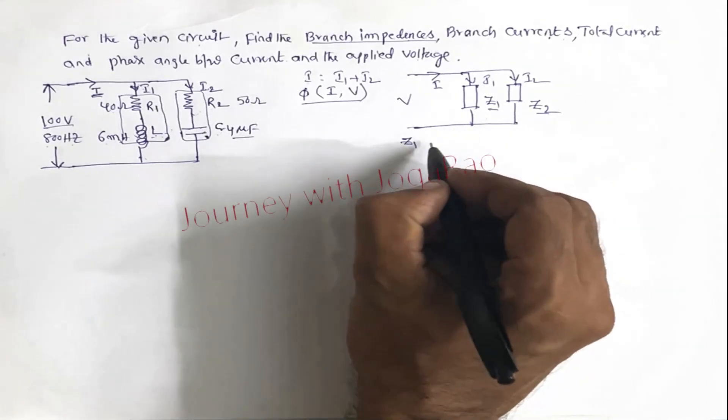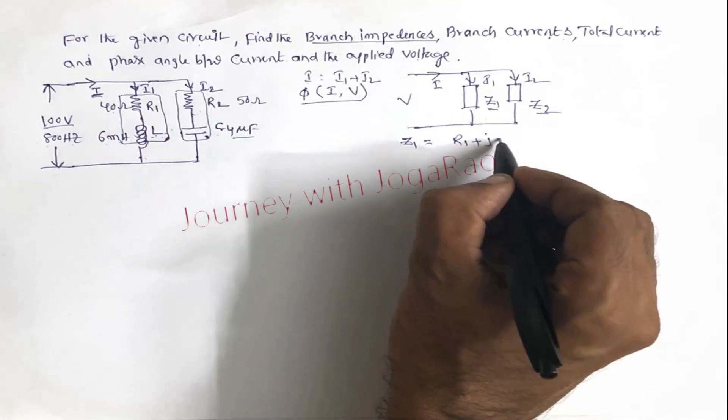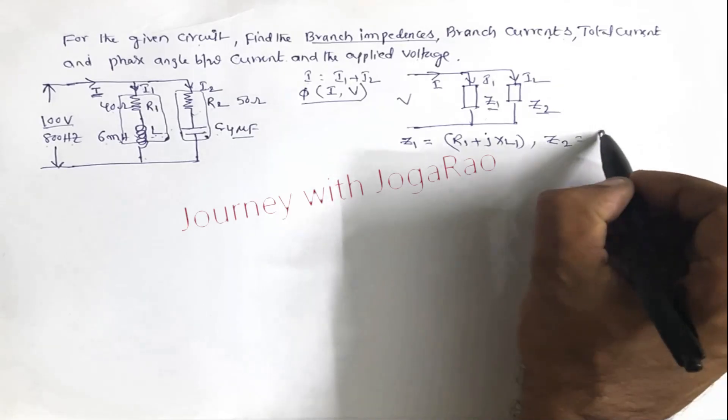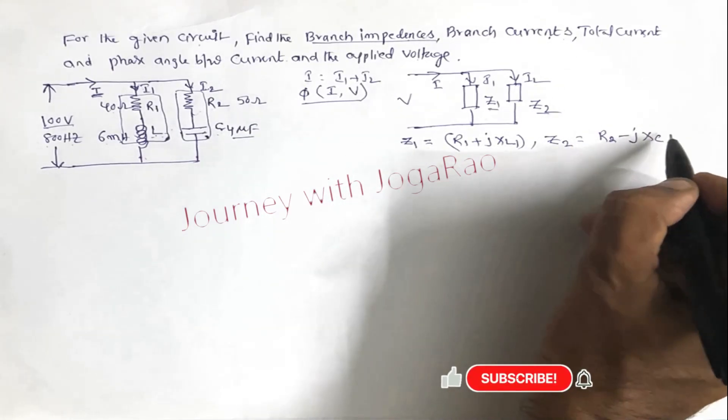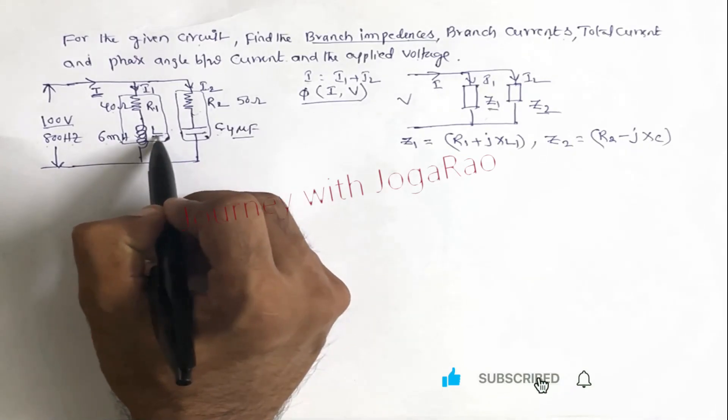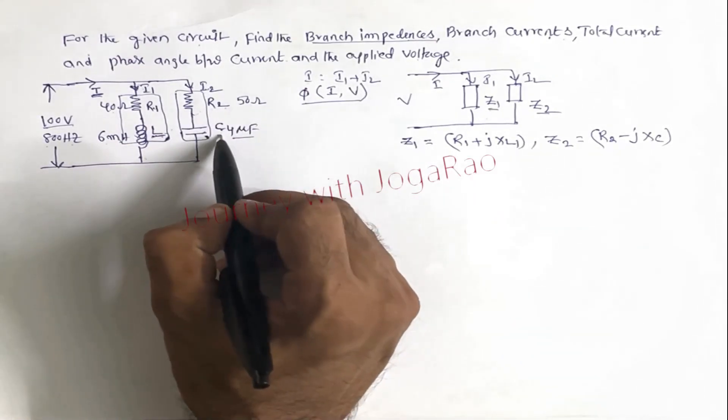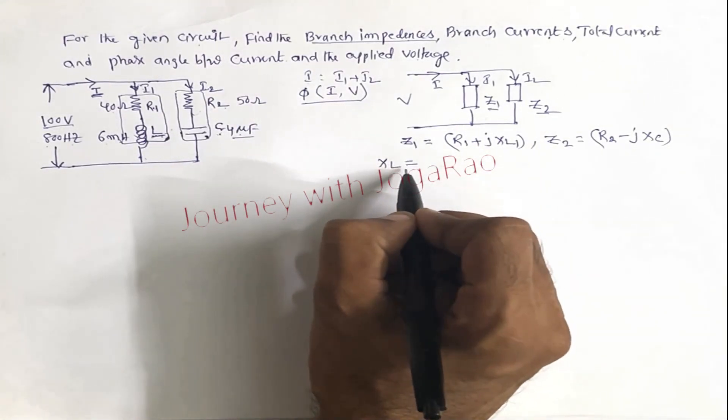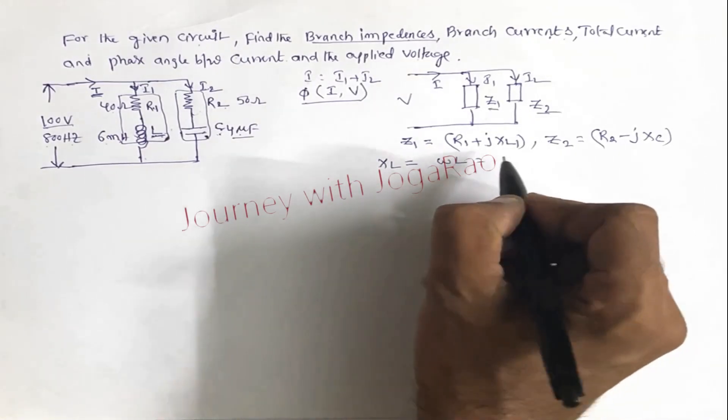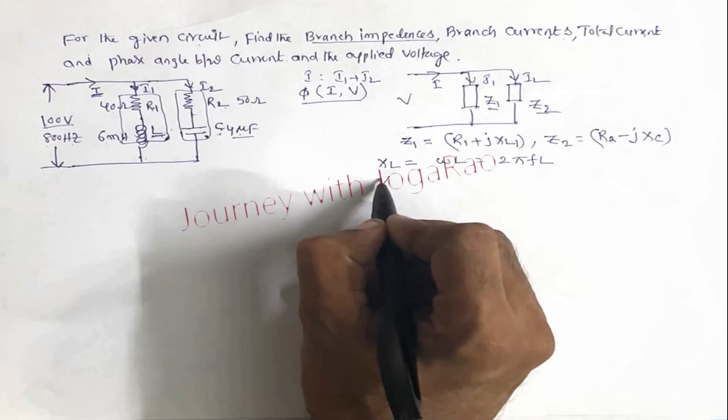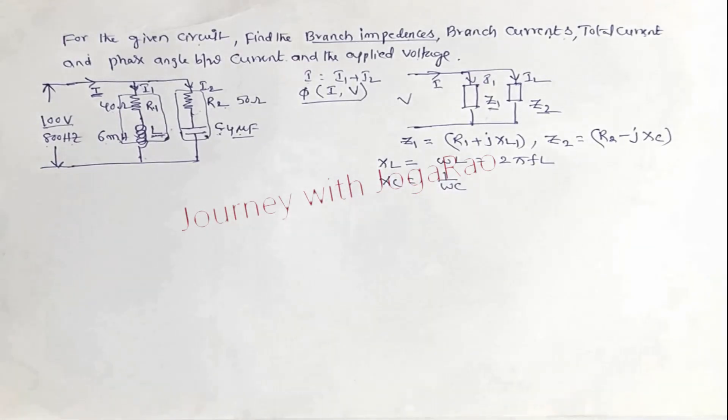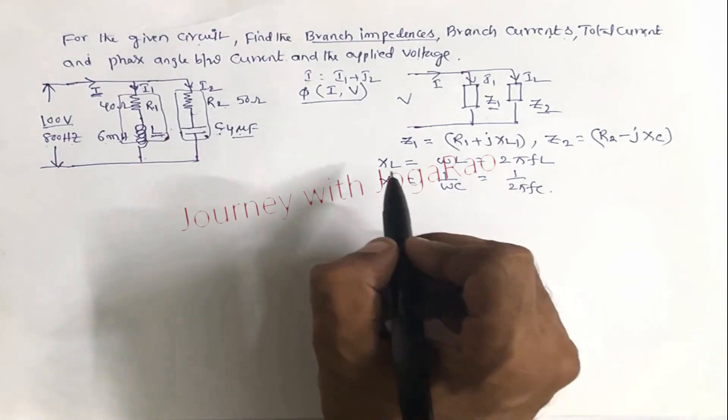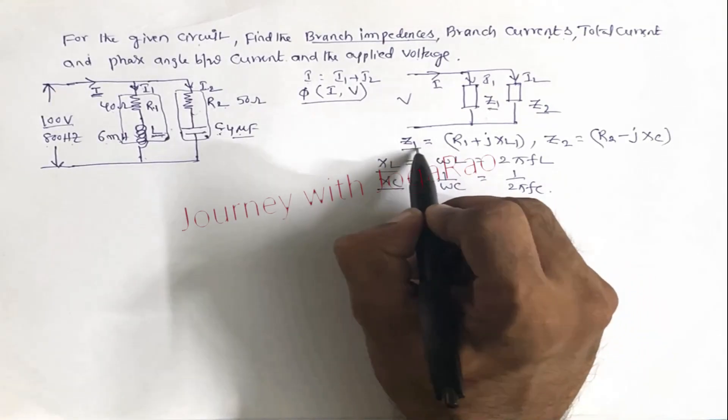First find out z1. z1 is equal r1 plus j xl1. Similarly z2 is equal r2 minus j xc. Where xl is inductive reactance, that is equal omega L, that is equal 2 pi f L. And similarly xc is 1 by omega c, the capacitive reactance. That is equal 1 by 2 pi f C. So xl and xc find out, then we can find impedance.